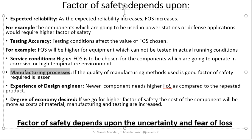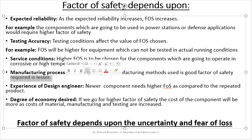The next important point is manufacturing processes. If the quality of the manufacturing methods used is good, the factor of safety required is lesser. Manufacturing processes involve two key factors: the machine and the labor. If the labor is skilled and the machine is of good quality, the component will be produced as per the required tolerances and specified dimensions. That is why, if the manufacturing processes are of the required accuracy, the factor of safety will be lesser.